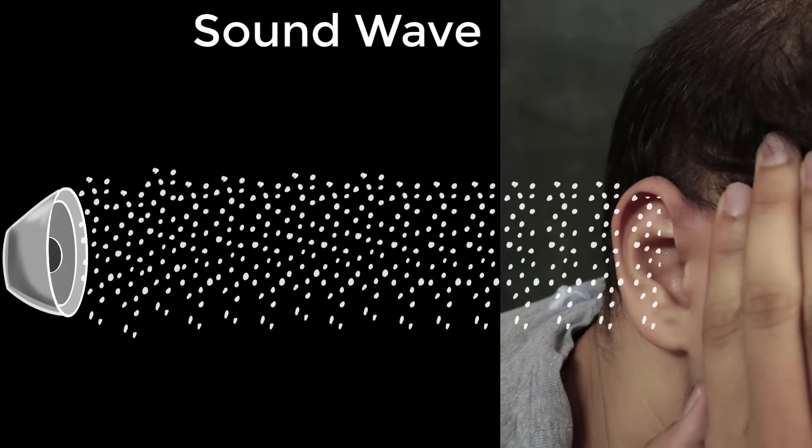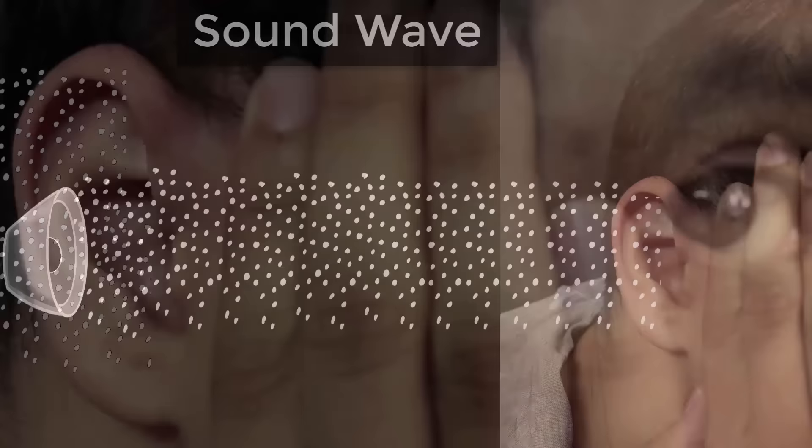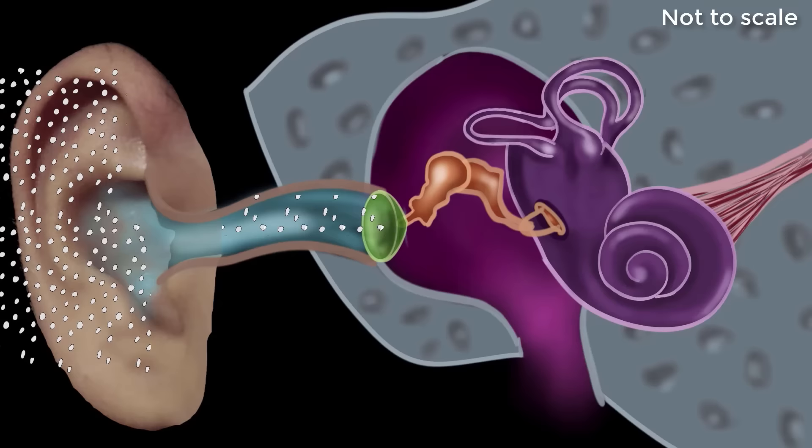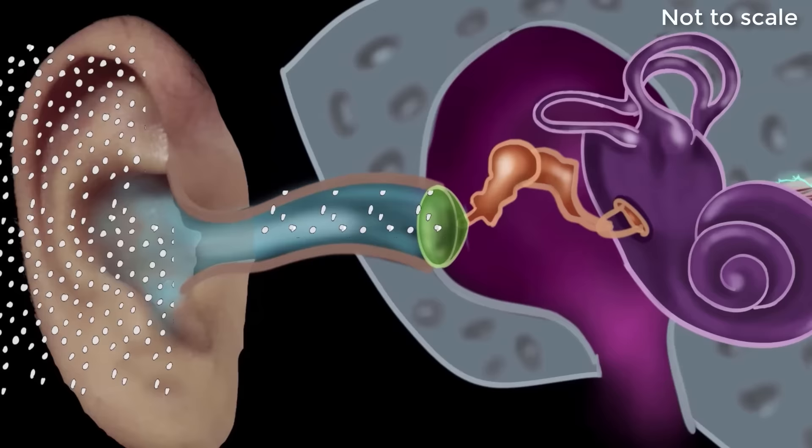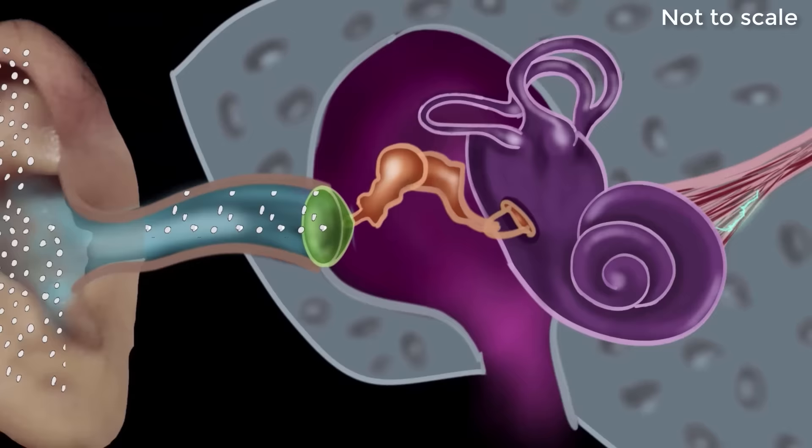For that we need to look at our ear carefully — the entire structure of the ear. So let's look at how the different parts of the ear work together to make us experience sound.